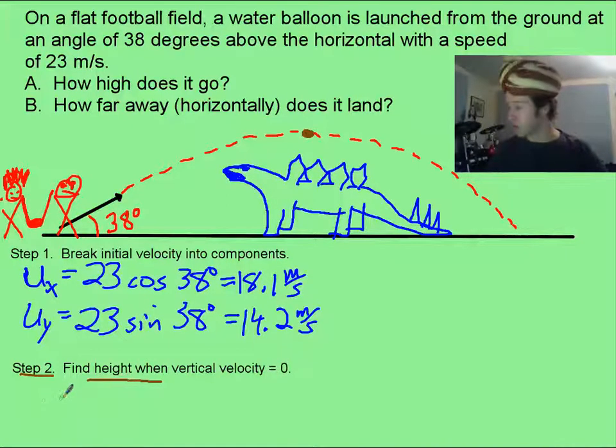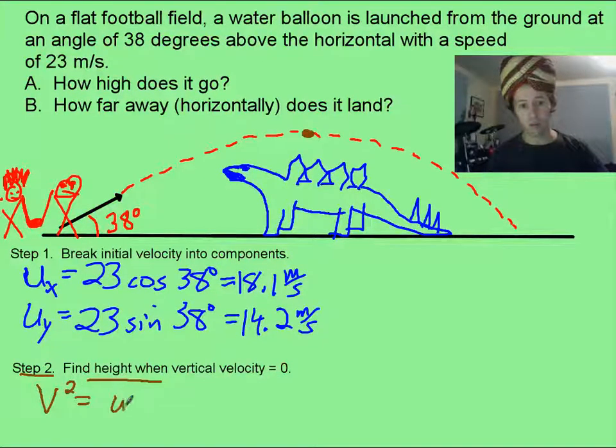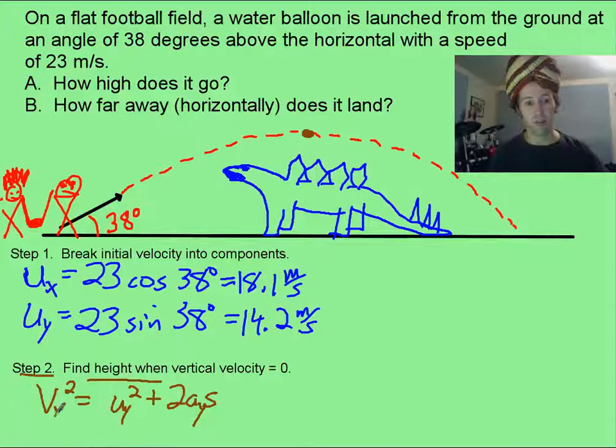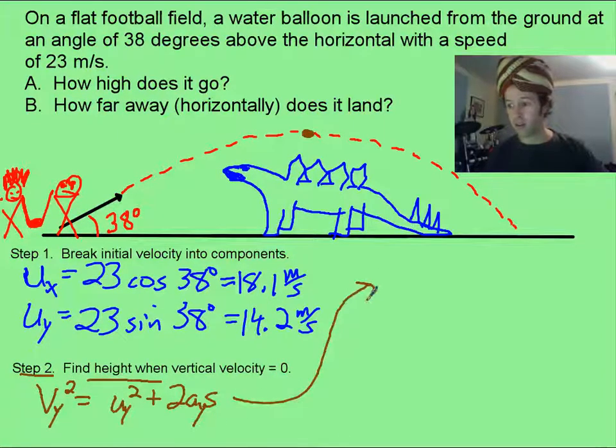So an equation that worked well for me was to say that v squared equals u squared plus 2as. Now this is all related to stuff only in the vertical direction, which I'm going to call the y. So if I come up here...